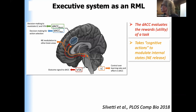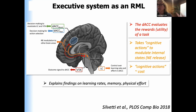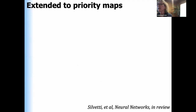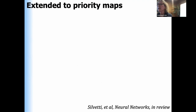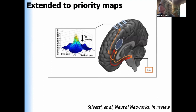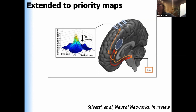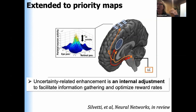This model has been applied to uncertainty-dependent modulations of learning rate, memory, and physical effort. We found in collaboration with Massimo that it can naturally, without parameter tuning, explain our uncertainty modulation in the parietal cortex — simply by assuming that norepinephrine affects a visual map and enhances responses in situations of high uncertainty. All we need is that the ACC detects uncertainty, calls for a release of norepinephrine, which enhances the gain of sensory information that reduces the uncertainty. This falls out without an explicit representation of uncertainty, simply as an internal cognitive state that leads to reward maximization.